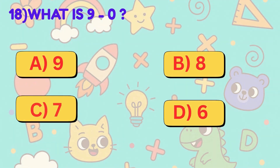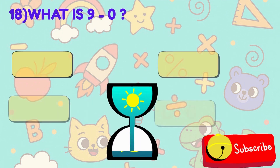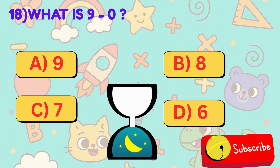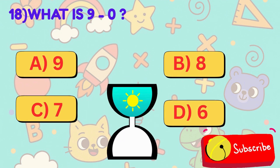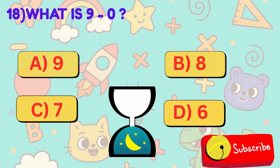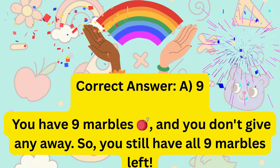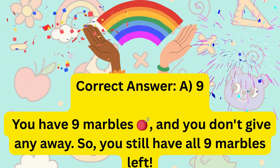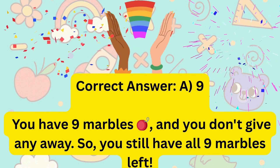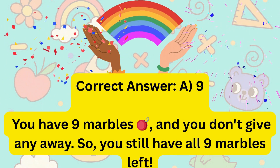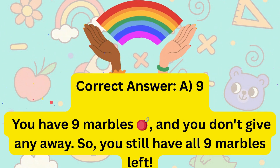18. What is 9 minus 0? Is it A, 9, B, 8, C, 7, or D, 6? Correct answer is A, 9. You have 9 marbles and you don't give any away. So you still have all 9 marbles left.